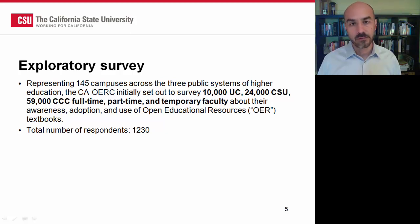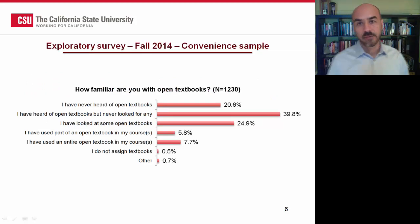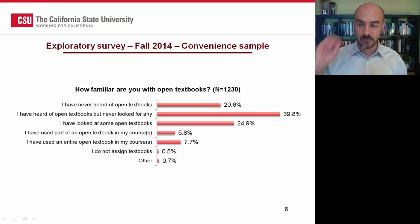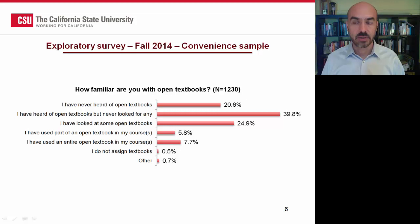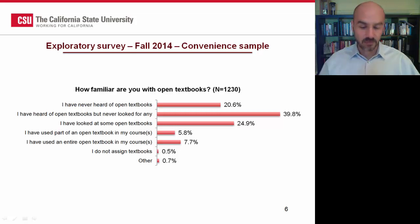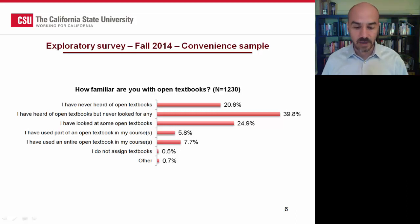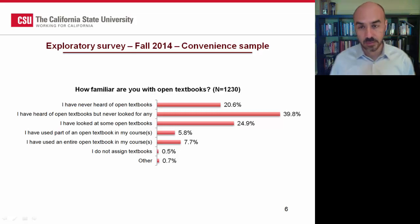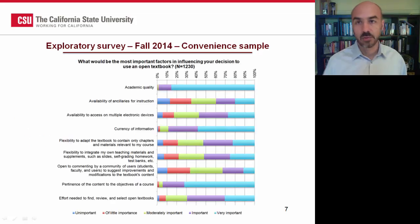I'm going to show you a few of the results from this survey. The very first thing is we asked our faculty how familiar they were with open textbooks, and from this graph you can already see that the majority of them — about 60% — have never heard of an open textbook or just have heard something but have never really looked at one. So faculty in California would seem from this survey to indicate that they don't have that much exposure to open textbooks.